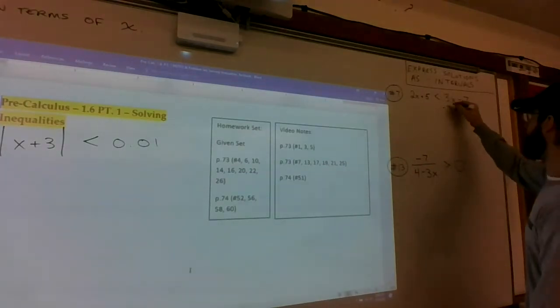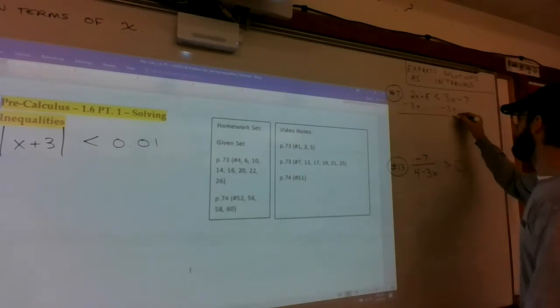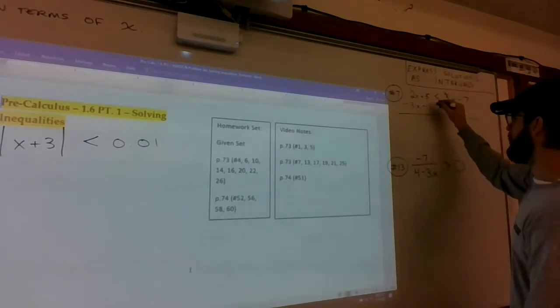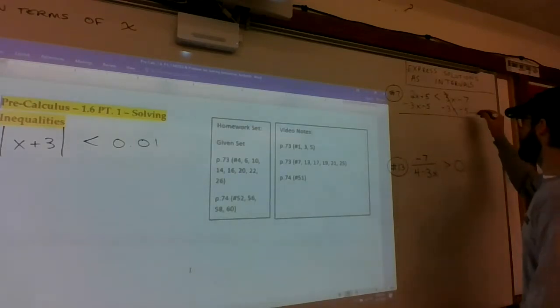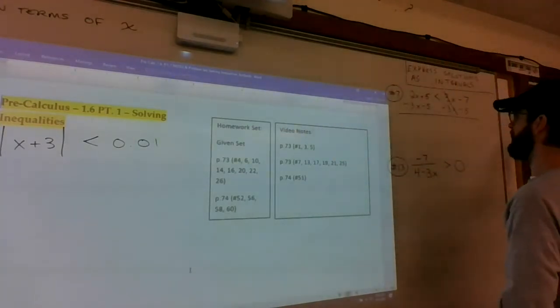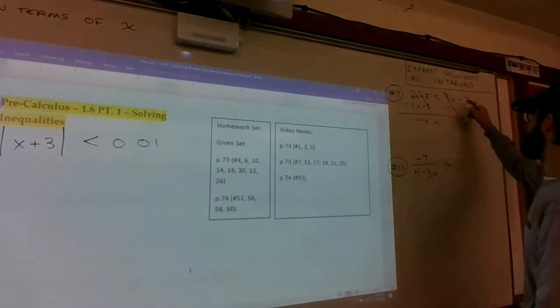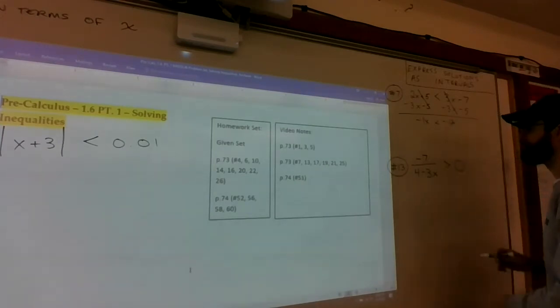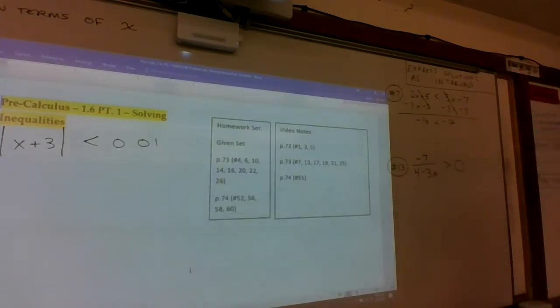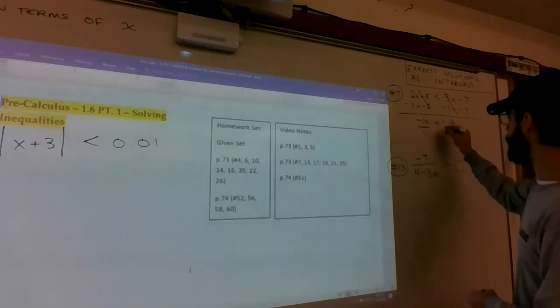You can subtract 3x from both sides and then subtract 5 from both sides. So x is isolated on one side, constants isolated on the other. You get negative 1x is less than negative 12. This is the point where we divide both sides by negative 1.